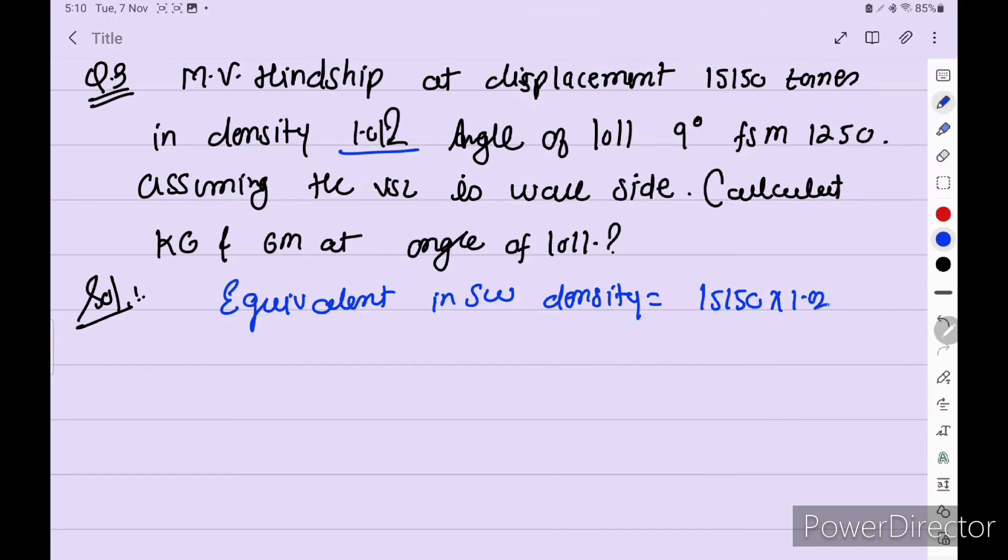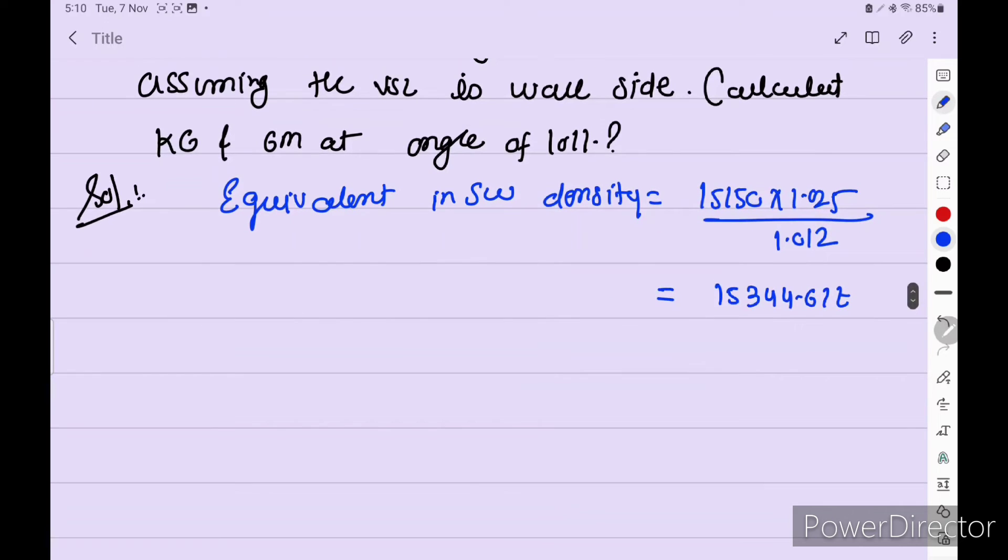So 15150 into 1.025 divide by 1.012. So we get 15344.61 tonnes. Okay.